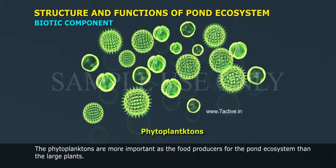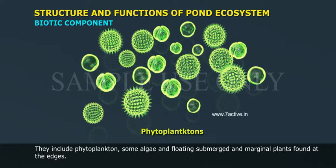The phytoplanktons are more important as food producers for the pond ecosystem than the large plants. They include phytoplankton, some algae, and floating, submerged, and marginal plants found at the edges.